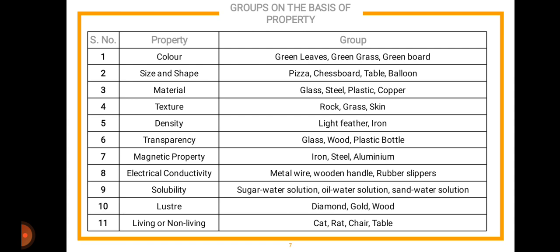Here is a table of classification criteria that you need to understand and remember. The first is color — examples: green leaves, green glass, green board. Then size and shape — pizza, chessboard, table, balloons. Material — glass, steel, plastic, copper. Texture — rock, grass, skin. Density — light feather and iron. Transparency — glass, wood, plastic bottle. Magnetic property — iron, steel, aluminum. Electrical conductivity — metal wire, wooden handles, rubber slippers. Solubility — sugar-water, oil-water, sand-water solutions. Luster — diamond, gold, wood. Living or non-living — cat, rat, chair, table.